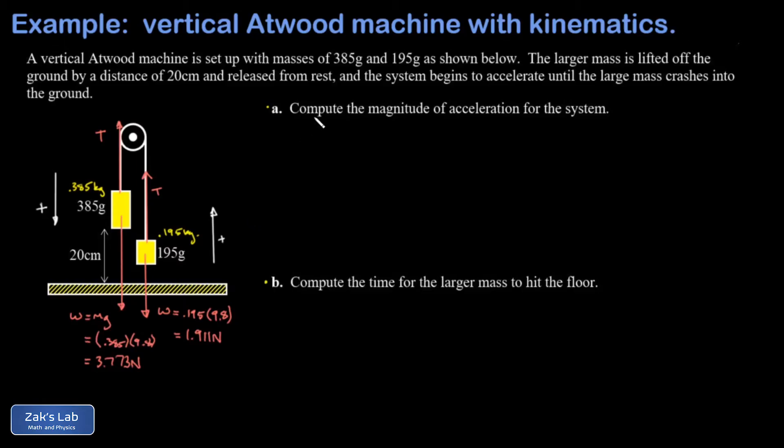Then we apply Newton's second law to each of these masses. I have the 0.385 kilogram mass and I write down F net equals ma. Using downward as positive, I have 3.773 newtons in the positive direction and then minus T because that's pointing up, and that's equal to the mass which is 0.385 kilograms times the unknown acceleration. We do the same analysis on the small block and this time T is the force pointing in the positive direction, so I have T minus 1.911 equals 0.195 times a.